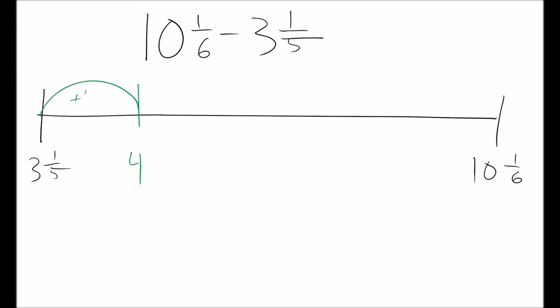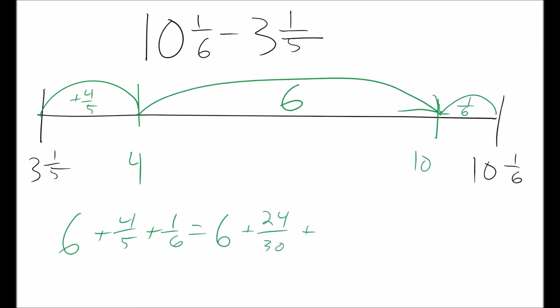This will work with larger mixed numbers as well. Ten and a sixth and let's do three and one-fifth. Mark the two points where they'd be on the number line, find our friendly numbers to jump to and then combine the fractions together until we have our solution.